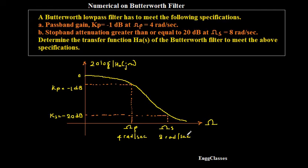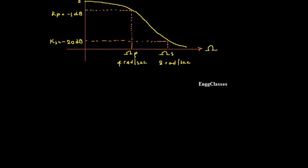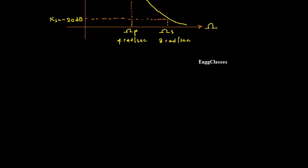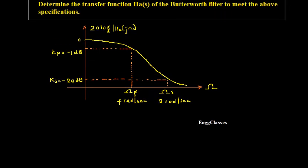I recommend you to watch this video till the end so that you can solve any numerical on a low pass Butterworth filter. I have explained 4 steps in the previous video, so go back and watch if you haven't. The very first task is to find n — the order of the filter.